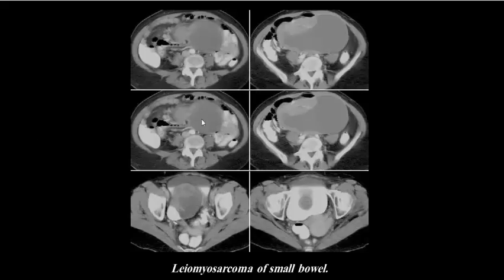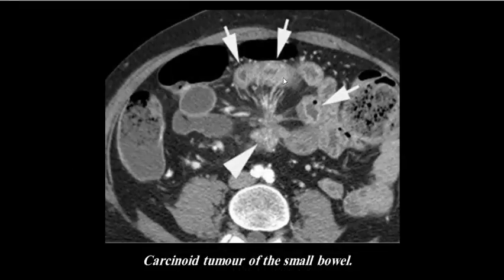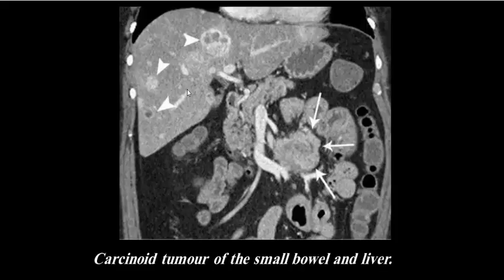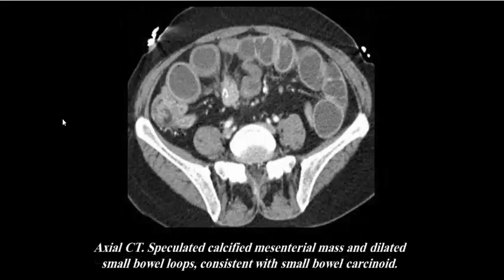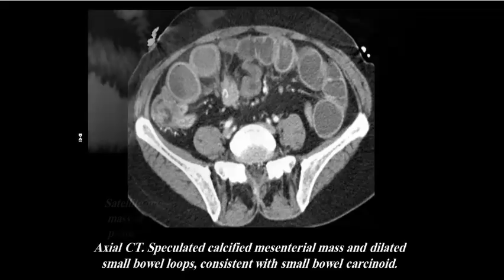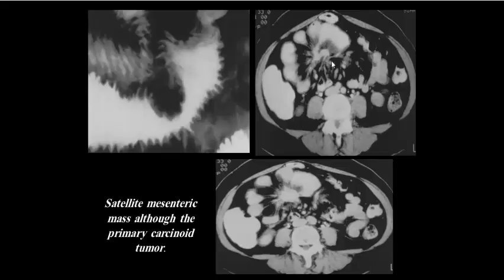Leiomyosarcoma of the small bowel presents as a large, irregular mass with low attenuation and heterogeneous enhancement. Carcinoid tumor of the small bowel is a small mass that may cause intestinal obstruction, associated with a mesenteric fat-strand star effect. Carcinoid tumor of the small bowel and liver is also shown; axial CT demonstrates a speculated calcified mesenteric mass with dilated small bowel loops consistent with small bowel carcinoid. Primary carcinoid tumor causes a filling defect in the wall.